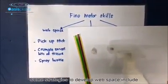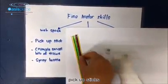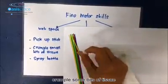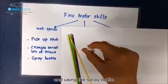Some strategies to develop web space include pick up stick, crumple small bits of tissue, and using the spray bottle.